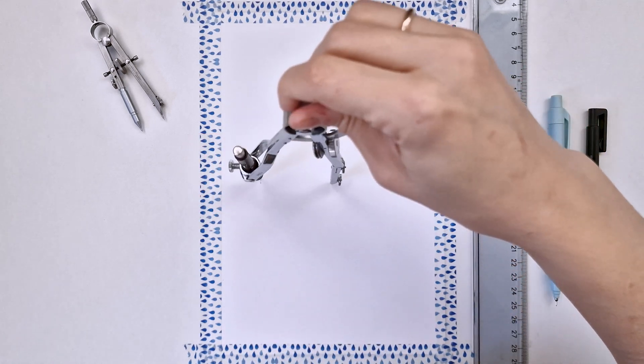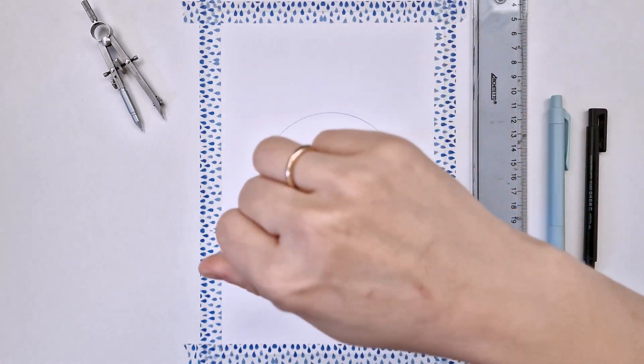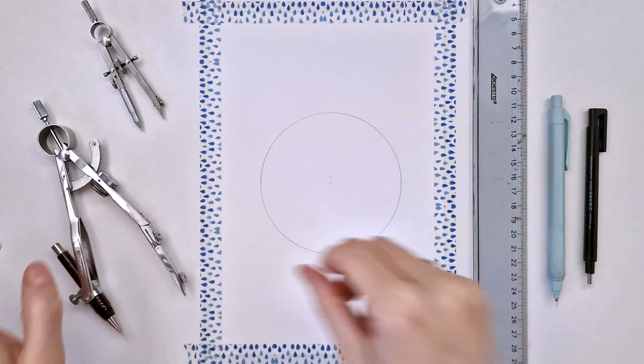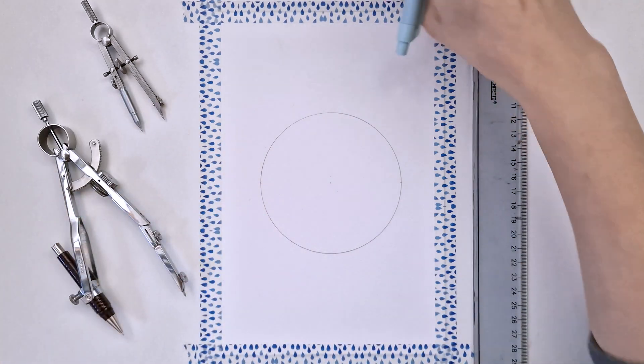Let's start with our circle. I'm using a 5 centimeter radius here but you can use any radius you like.